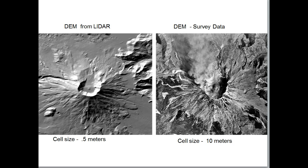On the left here is a hillshade created from a digital elevation model. One version has very high resolution — each grid is half a meter — and it's very clear. On the right it's a little choppier and less clear, from a DEM with 10-meter resolution.